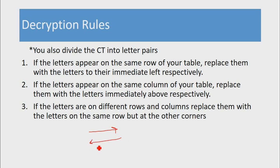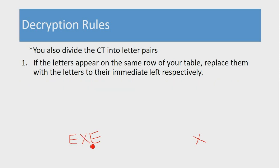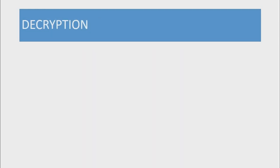One last thing to note with decryption: since we appended X's — both for odd-numbered plain text and in between double letters — after decryption your plain text may contain X's that don't make sense. For example, instead of 'tree' you'll get T-R-E-X-E. You simply need to remove those X's from your plain text after performing decryption to recover a message that makes sense.